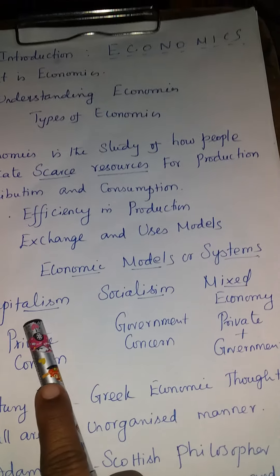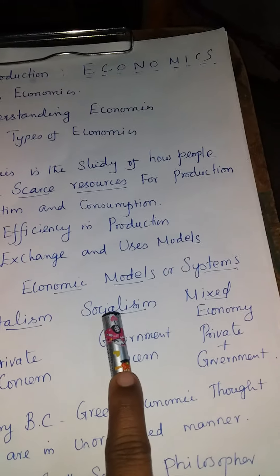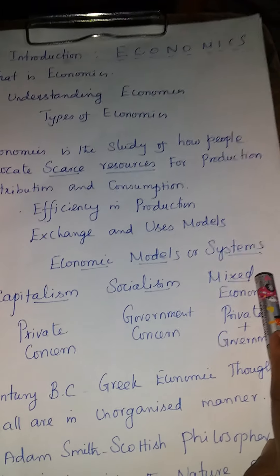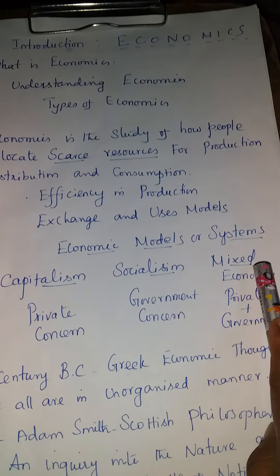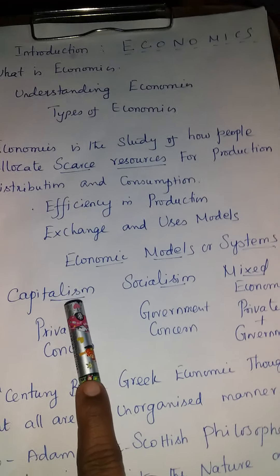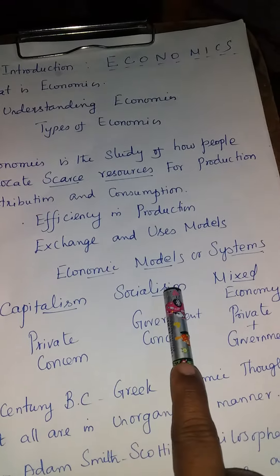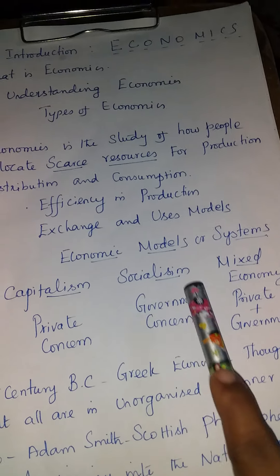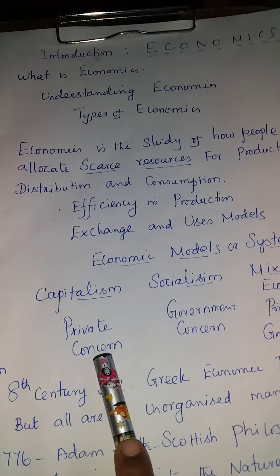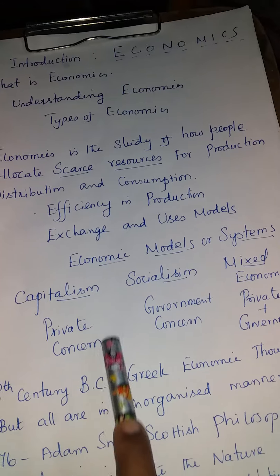In this world, there are three systems or models. That is isms — capitalism, socialism, and mixed economy or mixedism. There are three isms ruling over world countries. For example, capitalism — countries give more importance to private people. Capitalism countries include USA and Japan.